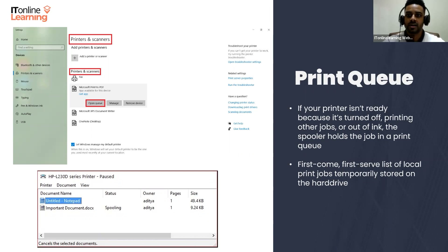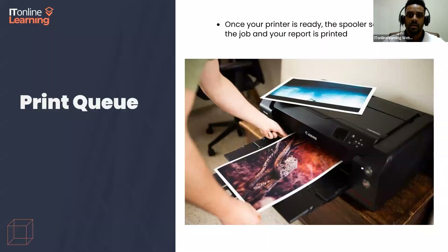The queue is a first-come, first-served list of local print jobs that are temporarily stored on your hard drive. You can check your printer's queue to see which jobs are waiting to be printed. Once your printer is ready, the spooler sends out the job and your report is printed. The journey is now complete.